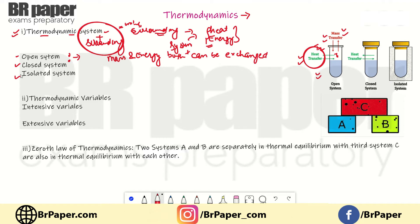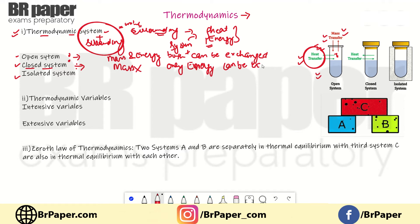The next system is a closed system. In a closed system, mass cannot be transferred, but energy can be exchanged. Heat energy can be exchanged between the system and the surroundings.